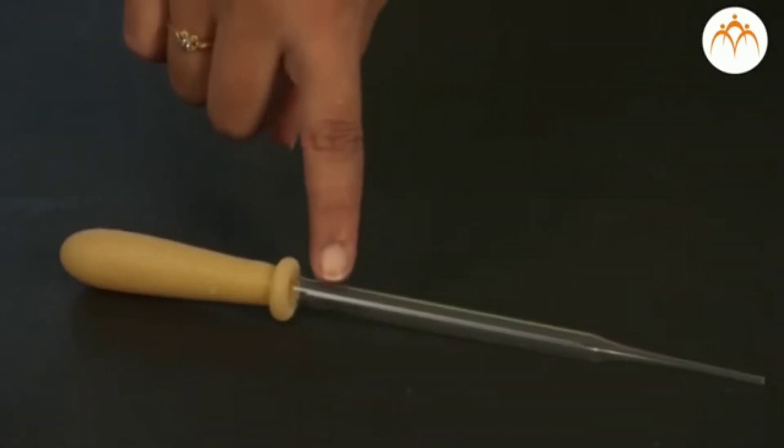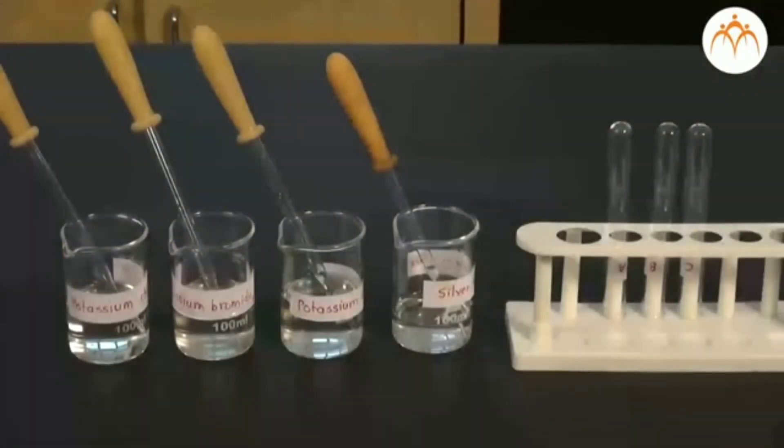Three powders are given which look similar in nature. They are all white crystalline powders. They are powders of potassium chloride, potassium bromide, and potassium iodide. For the experiment, normally we don't take them in powder form. We take their water solutions.